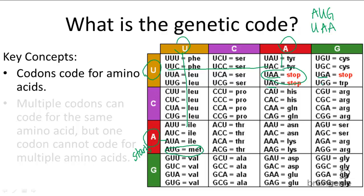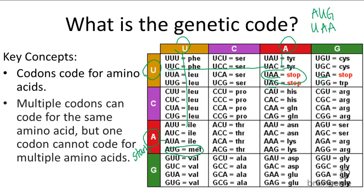If you look around, you'll find that there are more amino acids coded for by multiple codon sequences. In other words, multiple codons can code for the same amino acid, but never can one codon code for multiple amino acids. Were the latter to happen, a codon sequence would be ambiguous, and the wrong amino acid in a polypeptide sequence can do severe damage, as we've learned before.